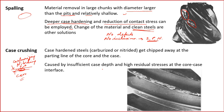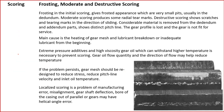Case crushing is caused by insufficient case depth and high residual stresses at the core-case interface. The case depth should not be too thin; it should be thick enough. Residual stresses should not be high — annealing or post-case-hardening heat treatment can help reduce them. Failure often occurs on only one or two teeth of a pinion or gear while the other teeth appear undamaged. Case crushing is different from spalling and should be distinguished between the two.